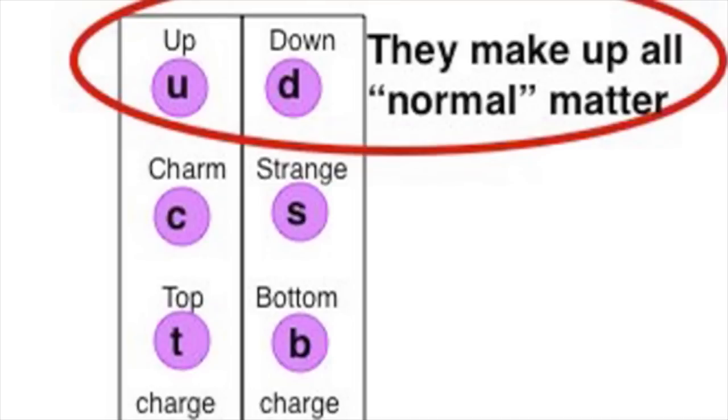Hadrons are particles which are made up from quarks. Of these, baryons comprise three quarks and mesons two.